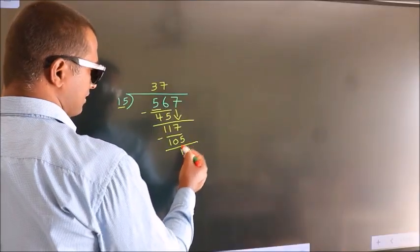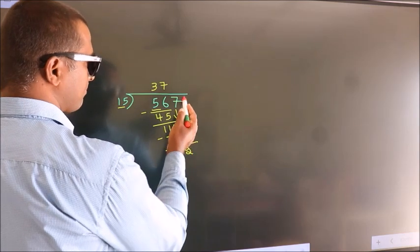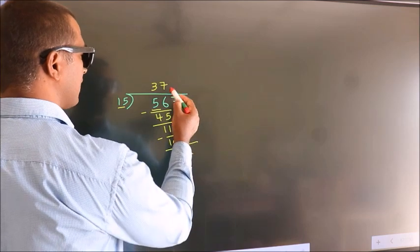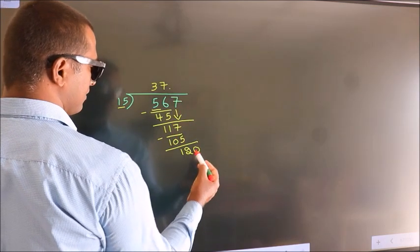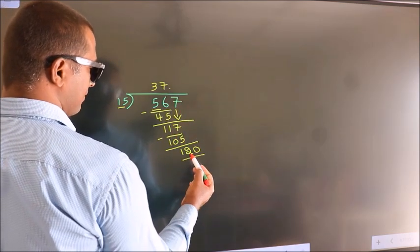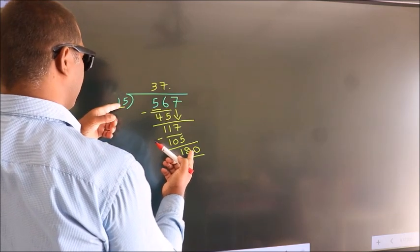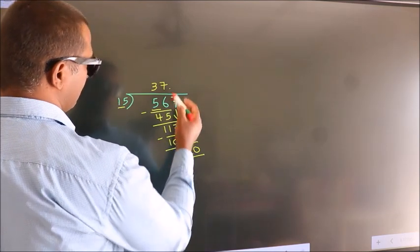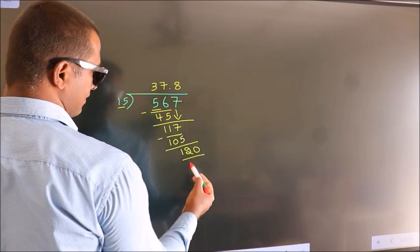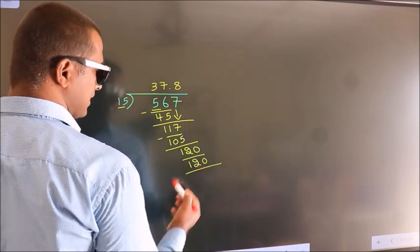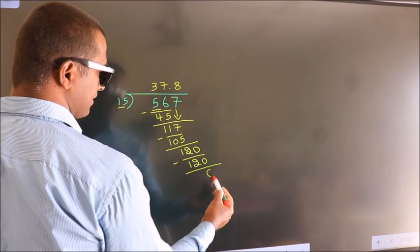After this, no more numbers to bring it down. So what we do is, we put a dot and take 0. So 120. When do we get 120 in the 15 table? 15 eights, 120. Now we subtract and we get 0.